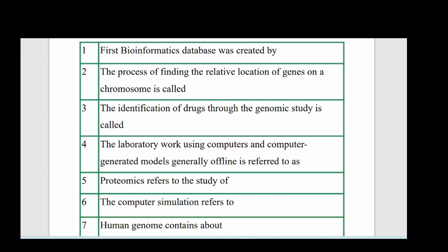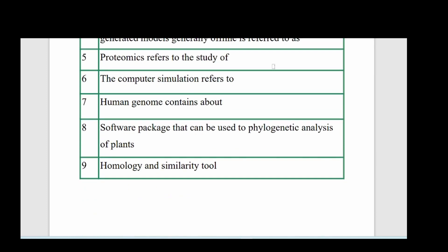The first question: the first bioinformatics database was created by whom? Second question: the process of finding the relative location of genes on a chromosome is called what? Third question: the identification of drugs through the genomic study is called what? Fourth question: the laboratory work using computers and computer-generated models generally offline is referred to as what?